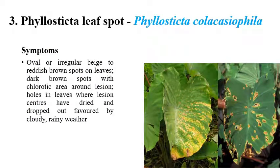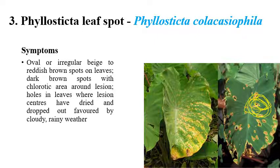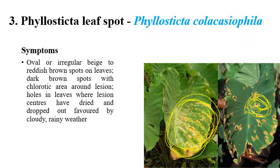The next disease is Phyllosticta leaf spot, which is caused by Phyllosticta colocasiophila. Shot hole symptoms can be seen on the leaves. Initially, oval or irregular shaped red to orange color spots appear on the leaves.